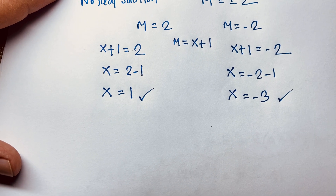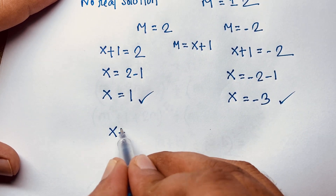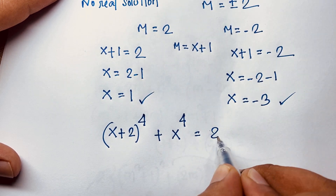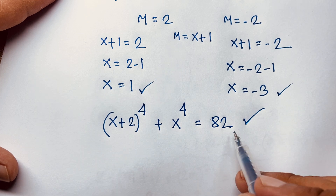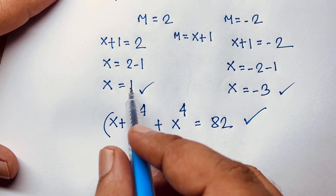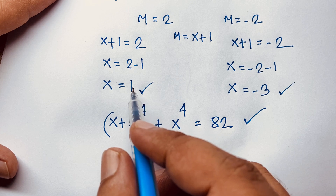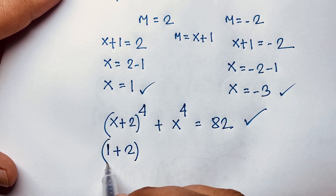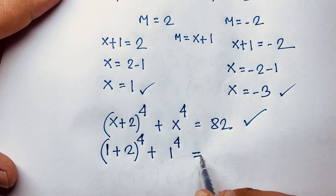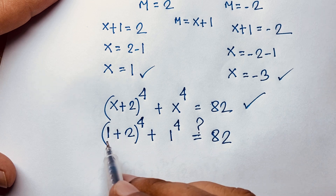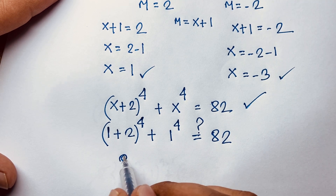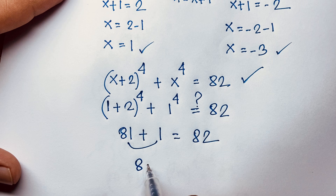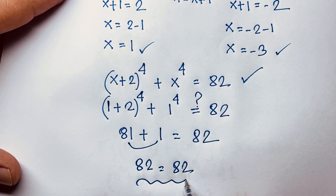Let's verify. Our question is (x + 2)^4 + x^4 = 82. This is our left-hand side and right-hand side. First, taking x = 1: it will be (1 + 2)^4 + 1^4 = 3^4 + 1 = 81 + 1 = 82. Left-hand side and right-hand side both are equal.